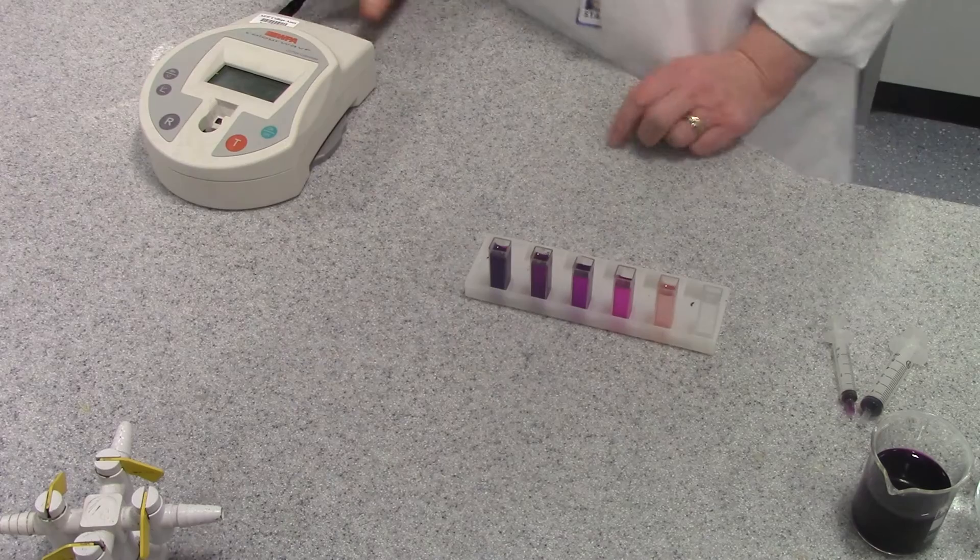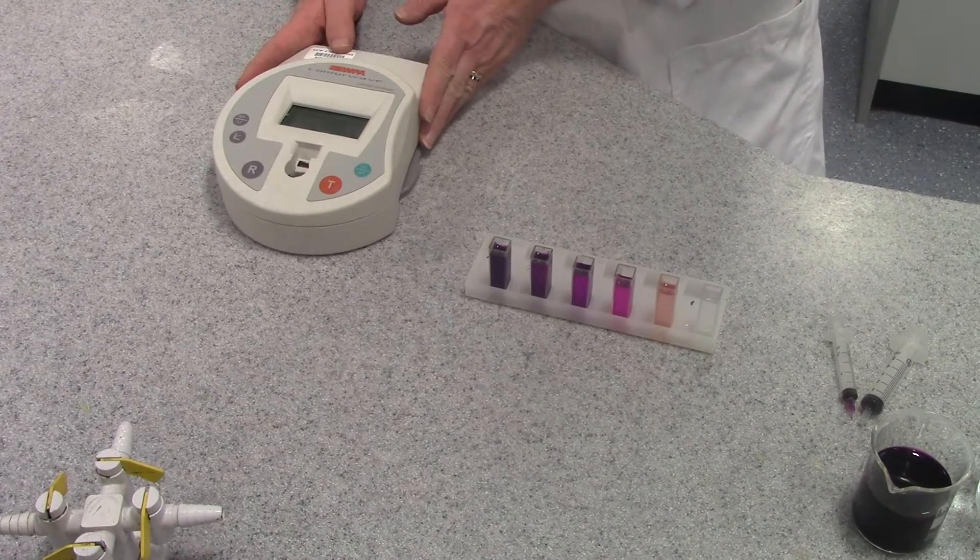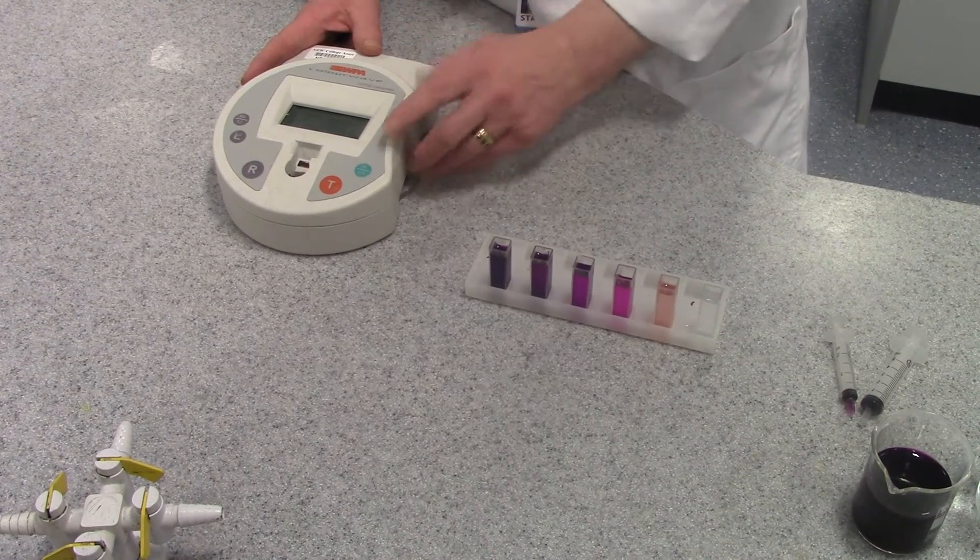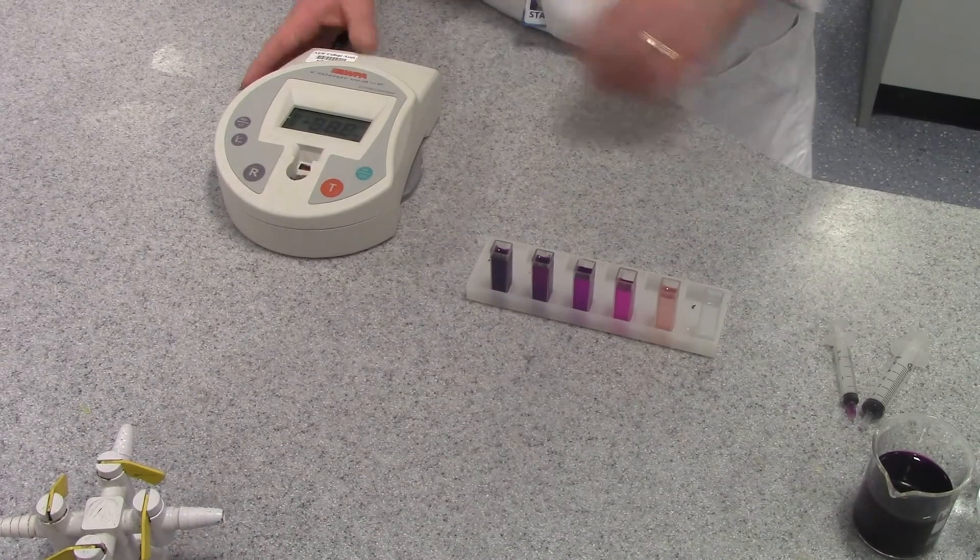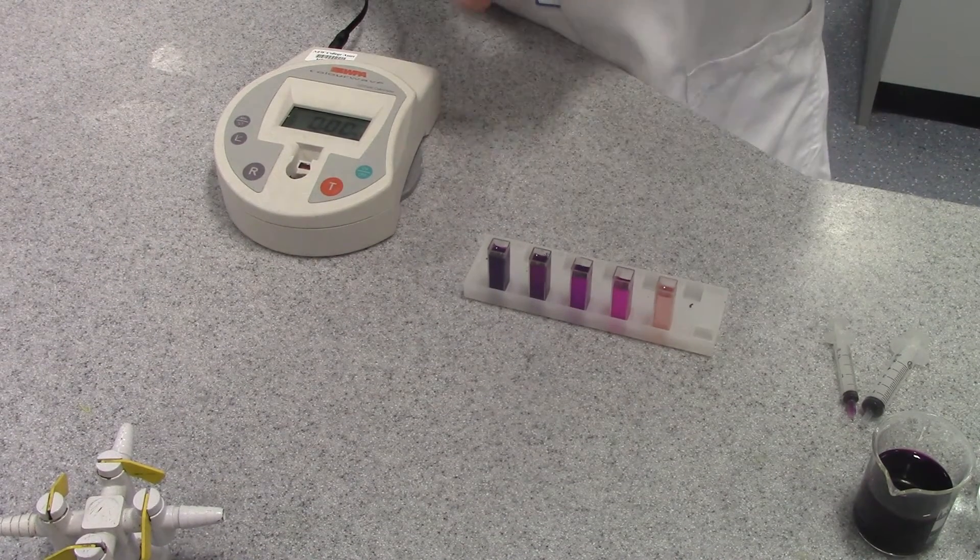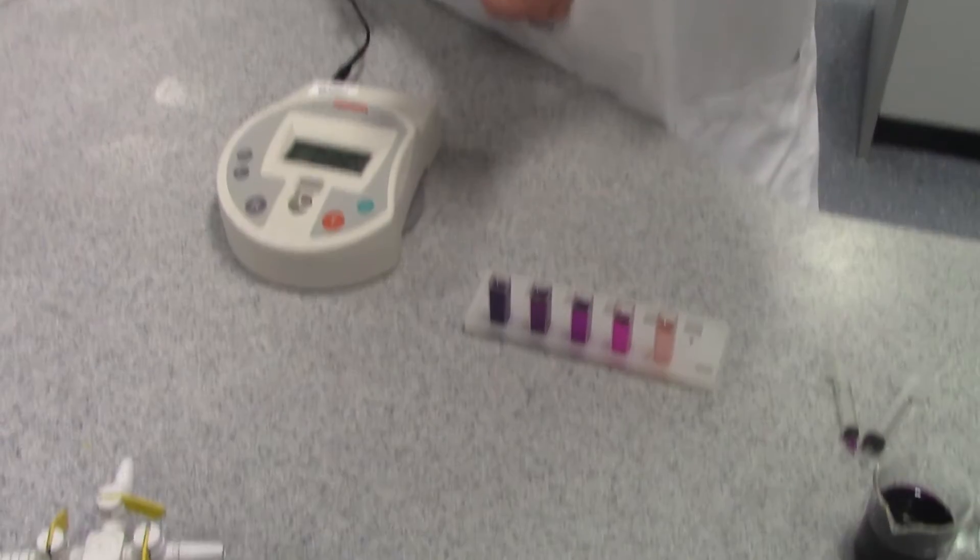When you're using the colorimeter, the first thing I'm going to do is turn it on. The colorimeter uses these special tubes called cuvettes.